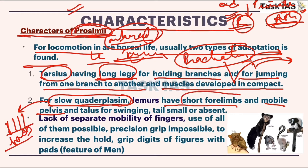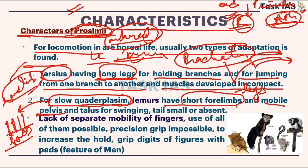In prosimians, short forelimbs are comparable in length with hind limbs. The mobile pelvis is useful for swinging. Tails are small or absent — their tail is almost absent.